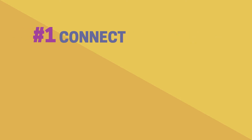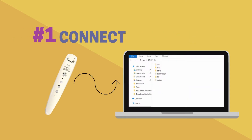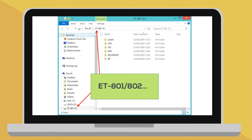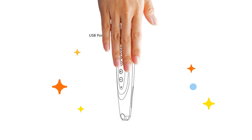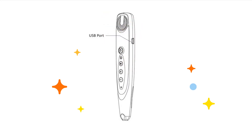Step 1: Connect the eTutorStar Learning Pen with your computer. The name of this device, AT801, will appear on your desktop upon successful connection. It functions as a USB external drive.